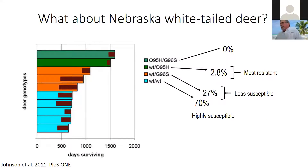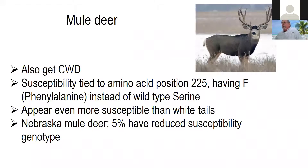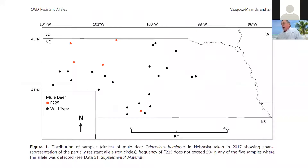In Nebraska whitetails, 70% are of the highly susceptible kind, 27% have the serine variant, and very few have the histidine. The resistant gene is widespread in Nebraska, but it's in very low frequency. Mule deer also get CWD, and unlike whitetails where two or three genotypes provide some resistance, in muleys there's just one — at position 225, if they have a phenylalanine instead of serine. Only 5% of these deer have reduced susceptibility, so in both mule deer and whitetails you'd have to consider the herd equally vulnerable throughout the range.